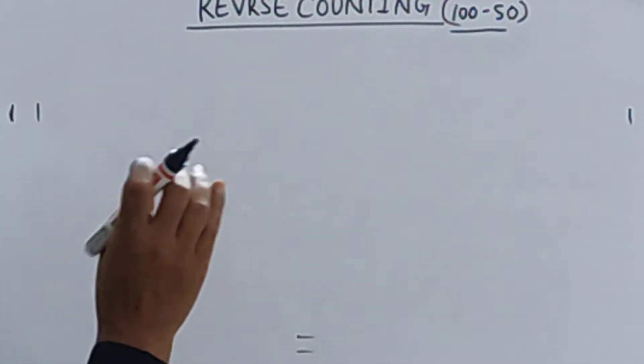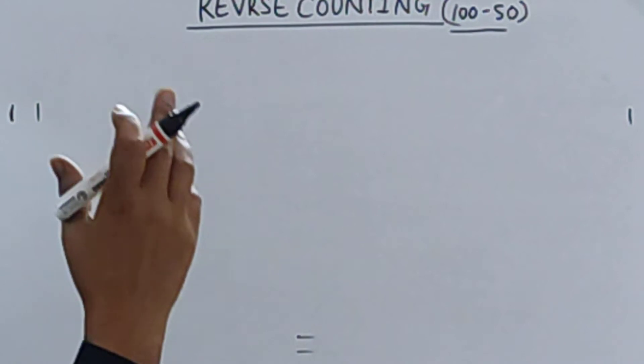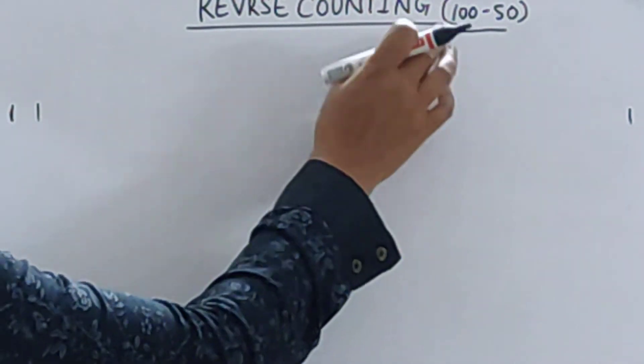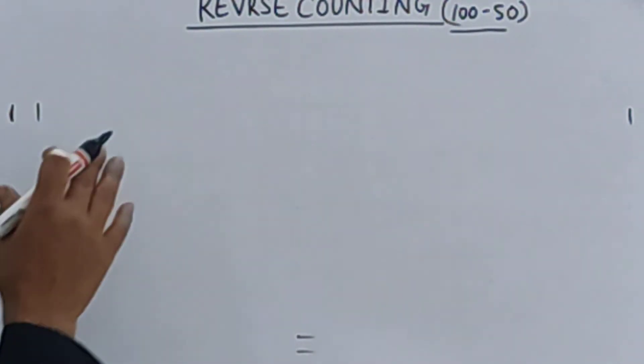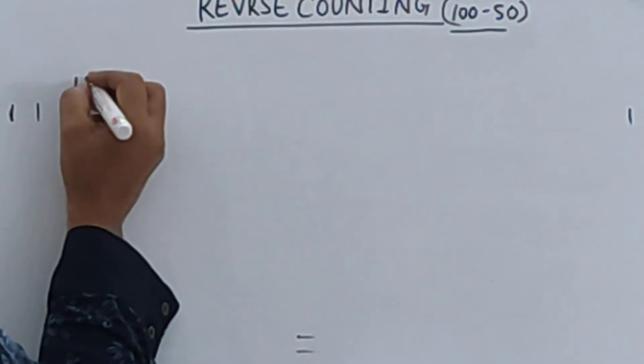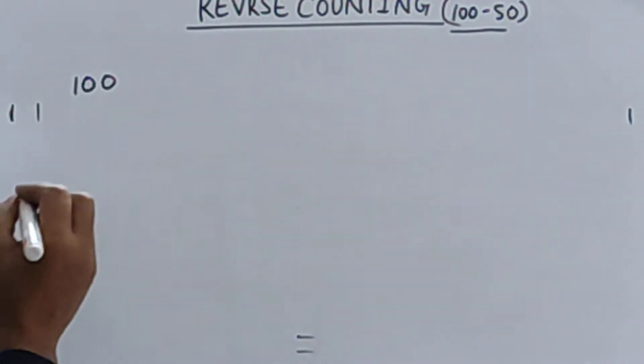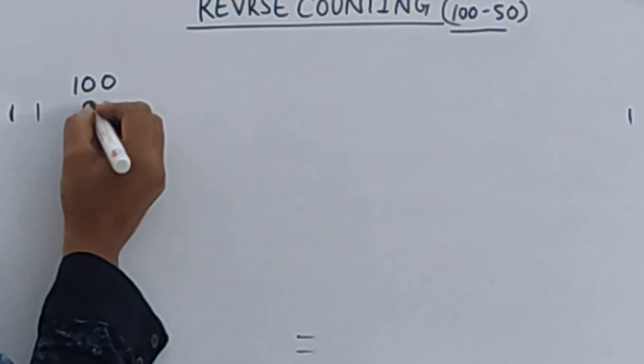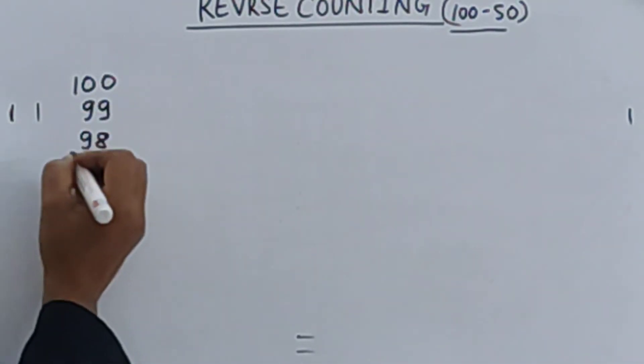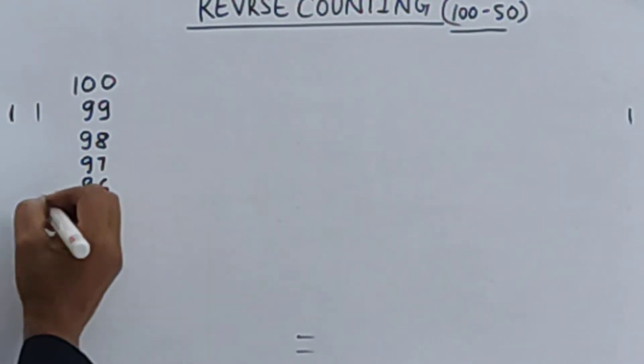We are going to write reverse counting. In previous classes we already learned how to write counting, so today we are going to write reverse counting. We will start from 100. 100, then what comes before 100? 99, 98, 97, 96.